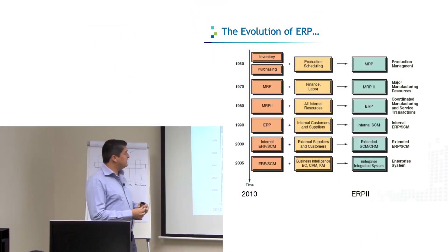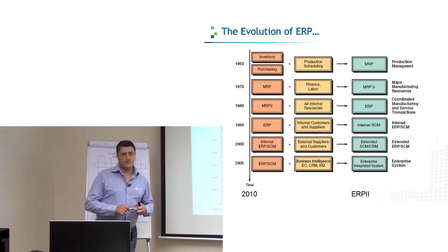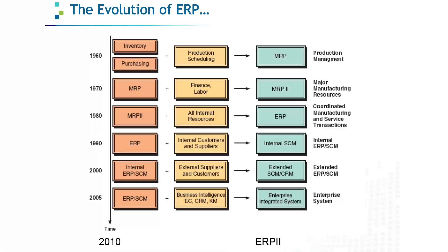Let's have a look at the historical development of ERP. In 1960, the primary drivers were inventory and purchasing, and they began to look at production scheduling. That evolved into MRP, which looked at production management. Then in the 70s it was MRP, and they began to look at finances, adding labor costs, and that evolved into MRP 2.